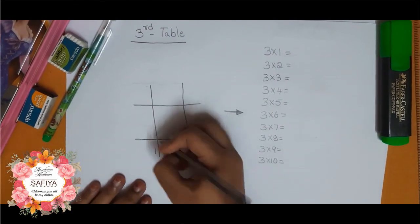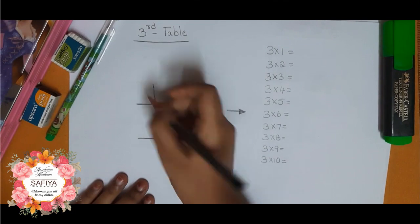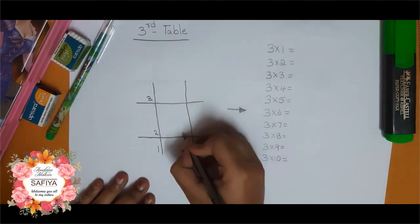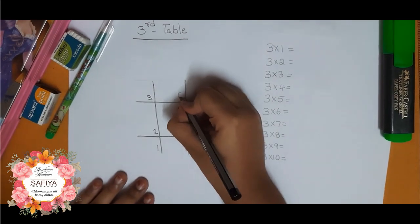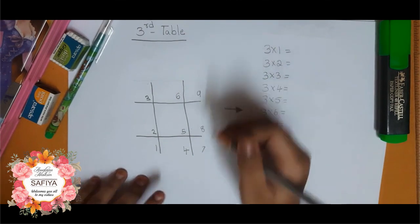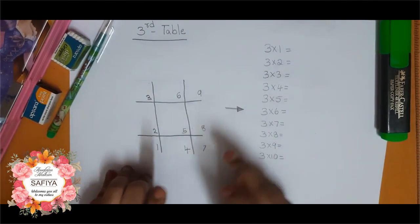Now start. 1, 2, 3, 4, 5, 6, 7, 8, 9 and put here 0.